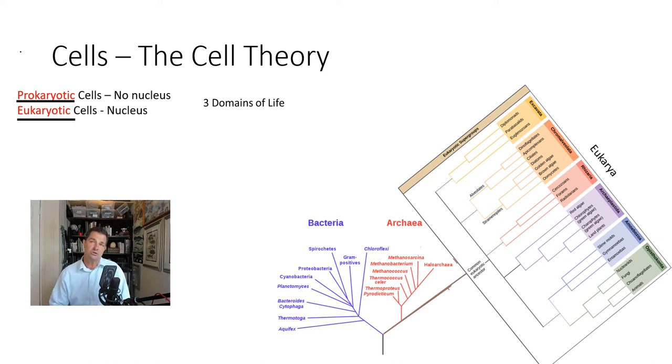There are basically two types of cells in a living organism: prokaryotic cells and eukaryotic cells. Prokaryotic cells are those that have no nucleus, and a eukaryotic cell does have a nucleus.